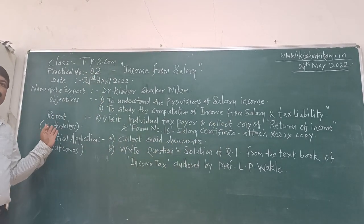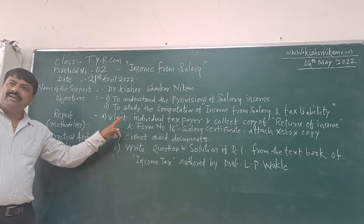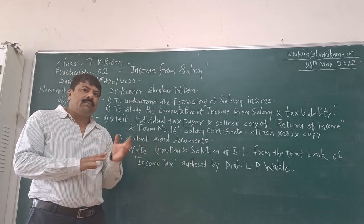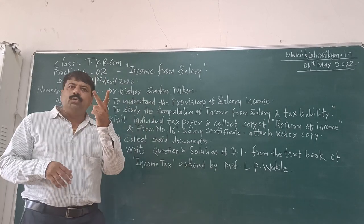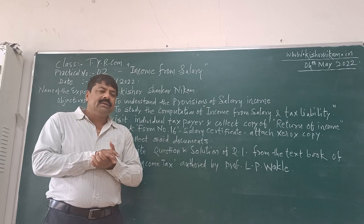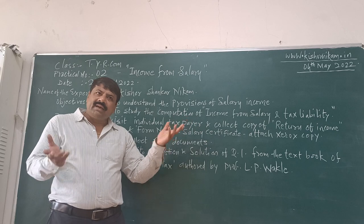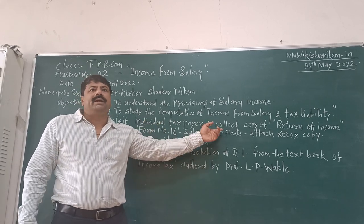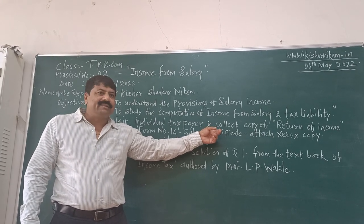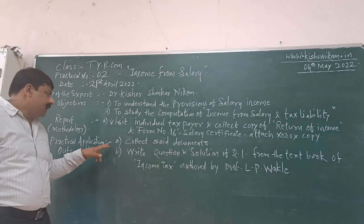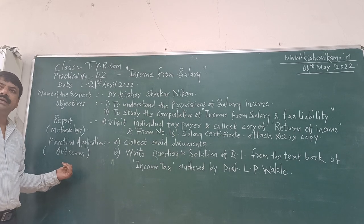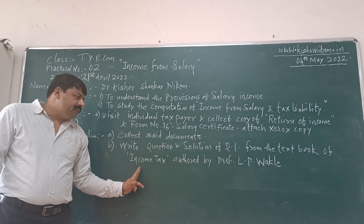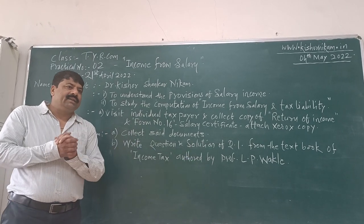For methodology used: visit an individual taxpayer and collect a copy of the return of income and Form 16, that is the salary certificate given by the employer to the employee. These are the two documents you have to collect — you can get a photocopy from an individual assessee; you can see taxpayers, parents, brothers, sisters — whoever you have. But there should be proper documentation with salary income and Form 16. You have to write down the question as well as the solution of question number one of Mrs. Kallani from the textbook of income tax by Professor L.P. Vakhali.